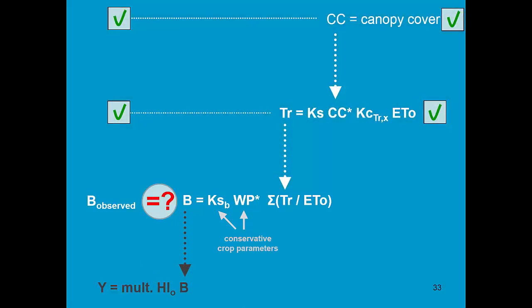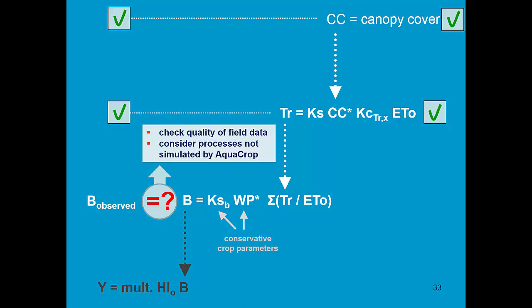If there is a mismatch between the observed and simulated biomass, most likely errors occur during the collection of data in the field. We need to check the quality of field data, or the mismatch can be due to processes which are not simulated by AquaCrop, and then we have to see how we can consider them.